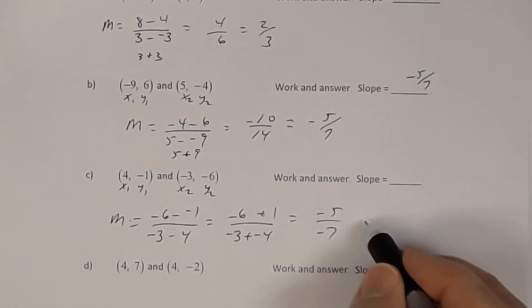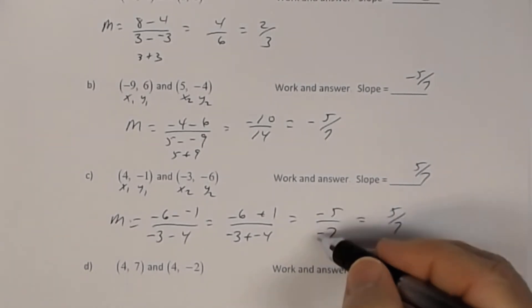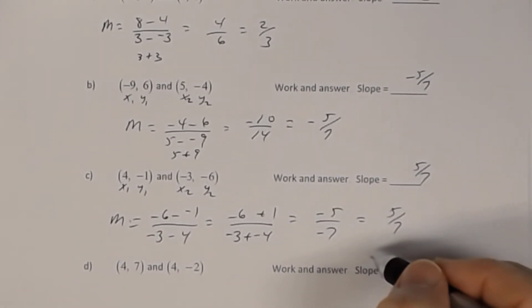The numerator is now negative 5, the denominator is now negative 7. It is expected that you should know a negative divided by a negative is a positive, so you should write 5/7. Don't leave it as negative 5 divided by negative 7—that indicates you don't know that a negative divided by a negative is a positive.